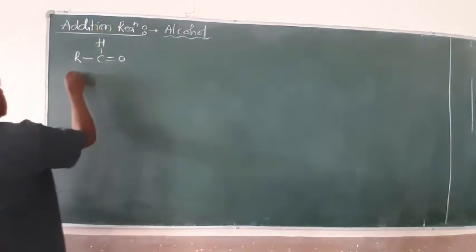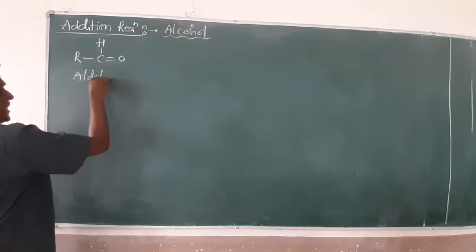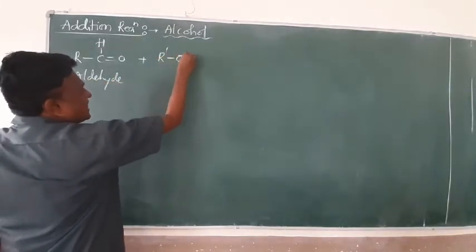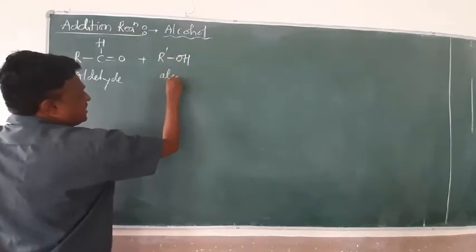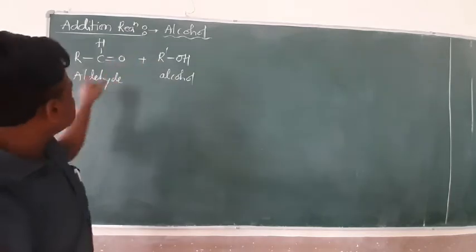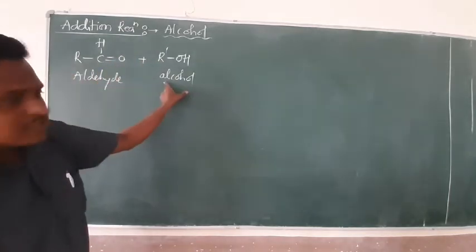So how is the formation of this acetal and hemiacetal by using the corresponding either aldehyde or ketone? Very simple. This is your aldehyde. As my convenience, I have to write this alcohol as R'. Yes, this is your alcohol. You don't bother about R dash. Just for my convenience R and R'. This is aldehyde and this is your alcohol.